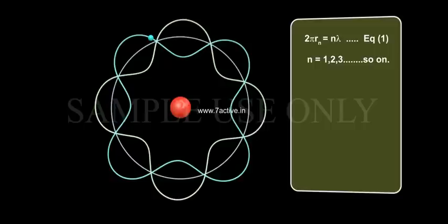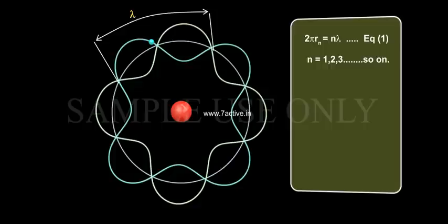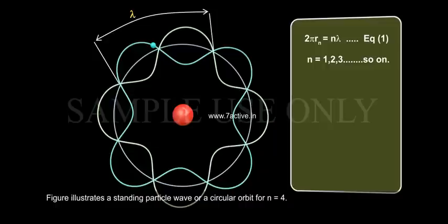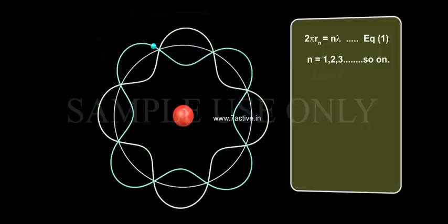2π rn equals n lambda, Equation 1, where n equals 1, 2, 3, so on. The figure illustrates a standing particle wave on a circular orbit for n equals 4.